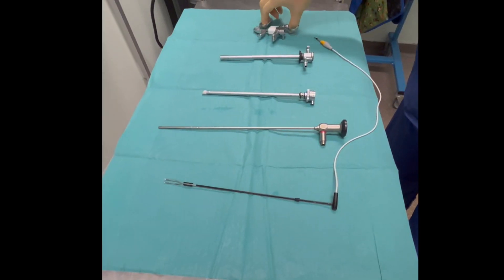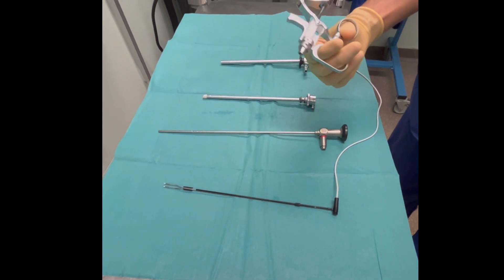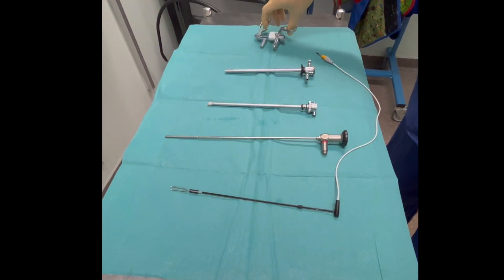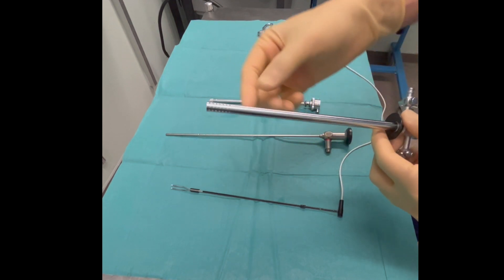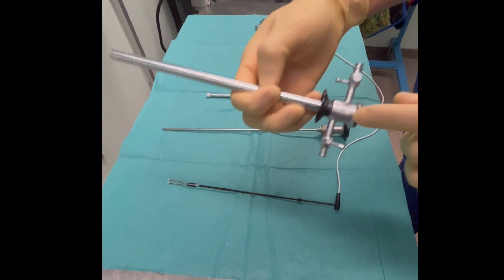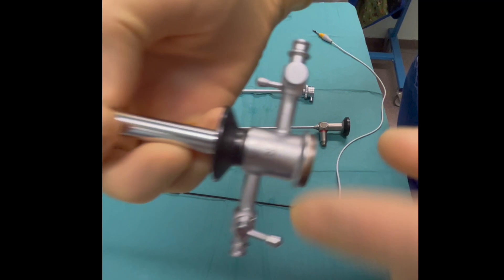This is a video demonstration on the VersaPoint bipolar resectoscopic system. It consists of five parts. The first is a handpiece, an outer sheet with outflow and inflow.